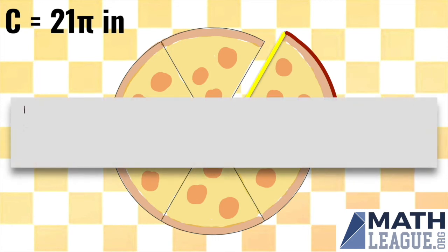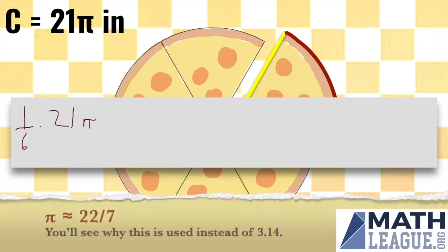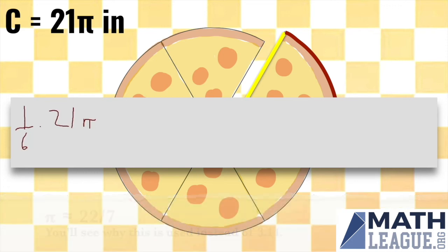We want one-sixth of that, or one-sixth times 21π. One of the approximations for pi that you may or may not know is 22 over 7, so pi is around 22 over 7.